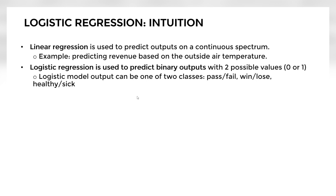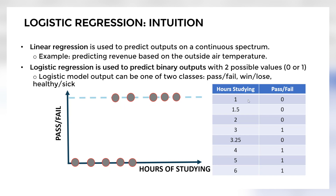Let's take an example to illustrate the idea. Assume I have a table and I wanted to develop a relationship between the number of hours of studying and whether a student passes or fails. On the y-axis I have pass or fail. If students study for one hour they will fail, two hours they fail, three hours they pass, 3.25 hours they fail, then four, five, and six hours they pass. If we plot this collected data, we find only two levels: zero and one.